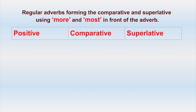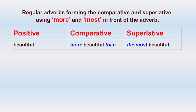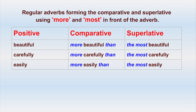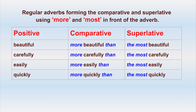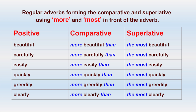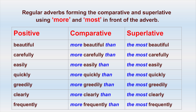The majority of regular adverbs that we use every day form the comparative and superlative using 'more' and 'most' in front of the adverb. Here is a list of some of these adverbs: beautifully — more beautifully — the most beautifully. Carefully — more carefully — the most carefully. Easily — more easily — the most easily. Quickly — more quickly — the most quickly. Greedily — more greedily — the most greedily. Clearly — more clearly — the most clearly. Frequently — more frequently — the most frequently.